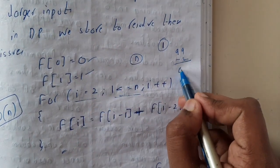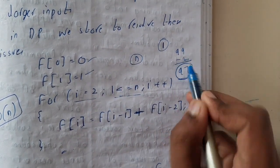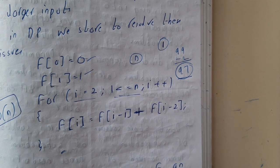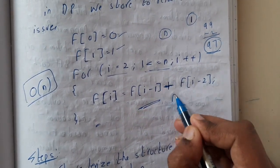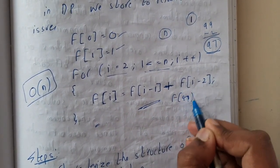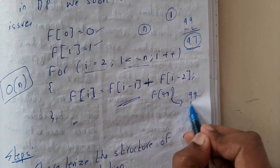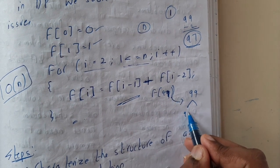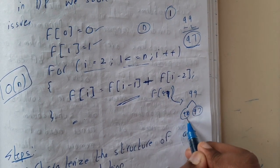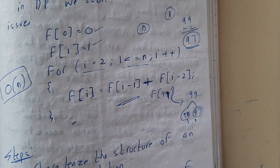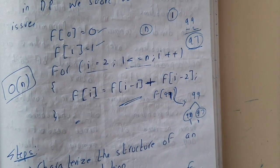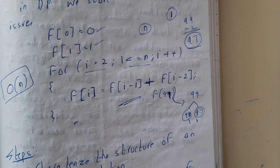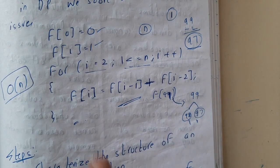For Fibonacci(99), the DP approach does only about 97 operations instead of hundreds. You calculate up through Fibonacci(97) and Fibonacci(98), store those values, and then directly substitute them to compute Fibonacci(99). I hope everyone got a clear idea on dynamic programming — we use it to optimize solutions that are really complex for larger inputs using the normal recursive method.